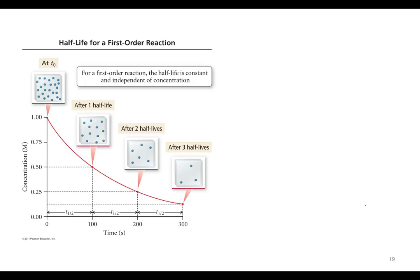So another really useful way to quantify rates, how fast or slow chemical reactions are, is something called the half-life.